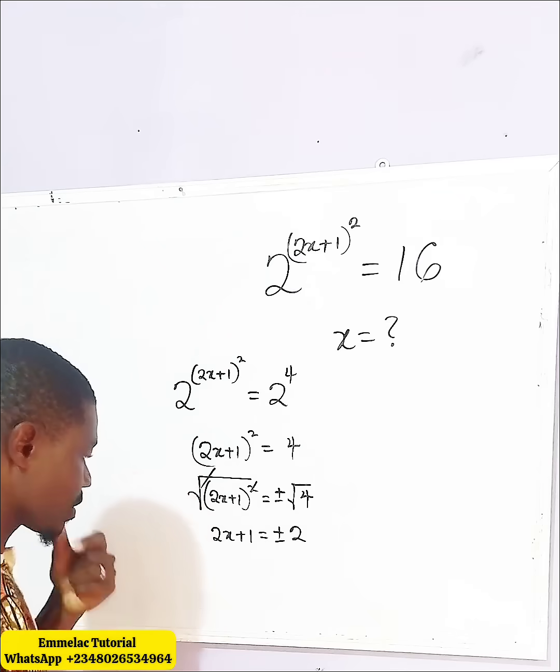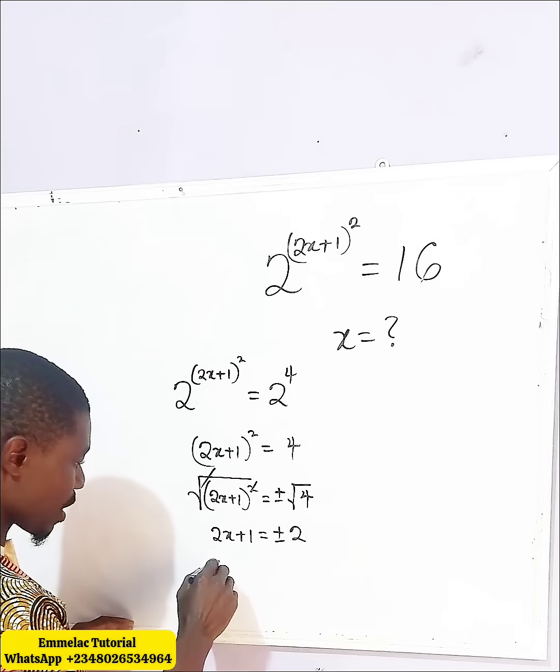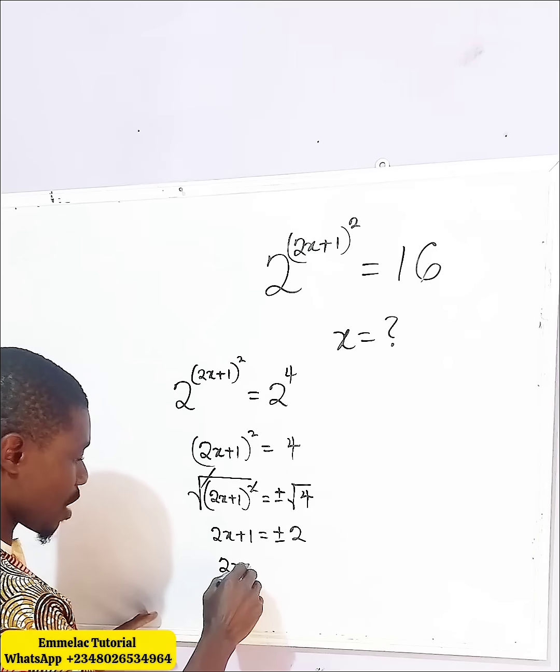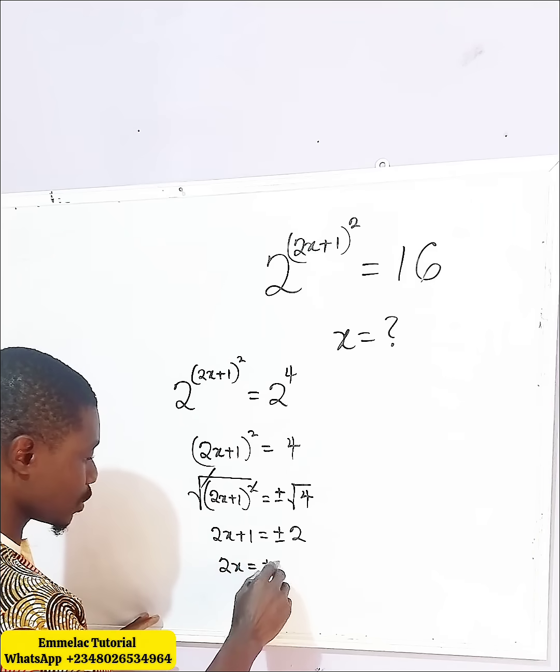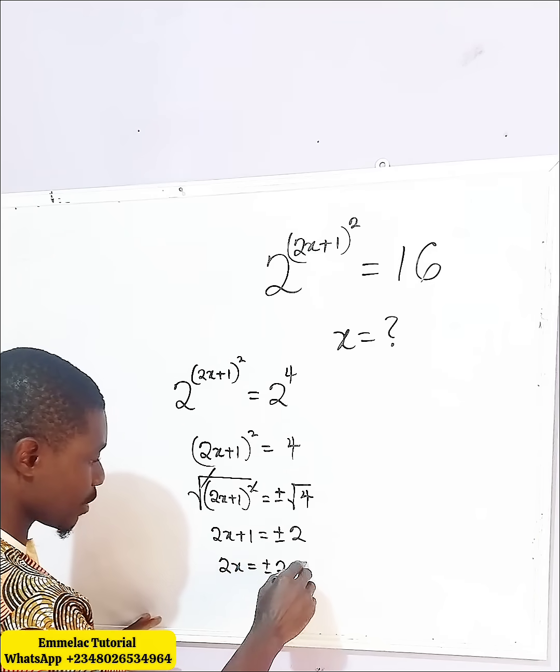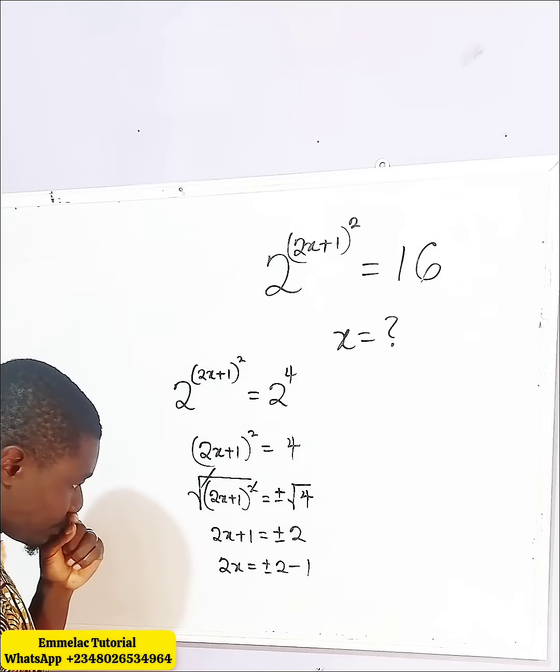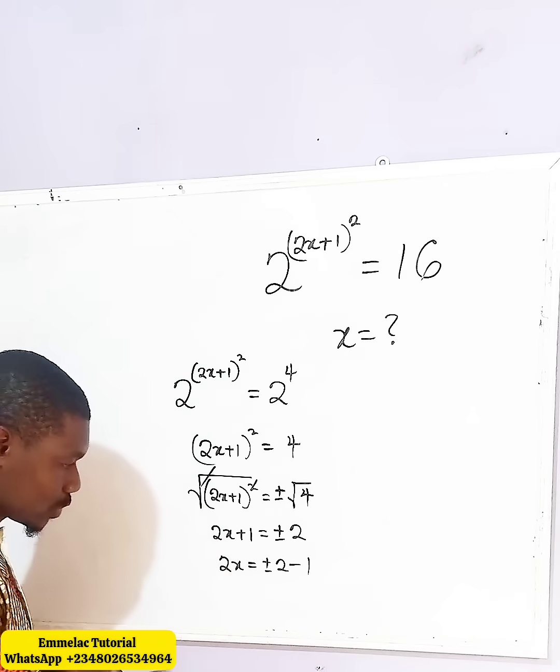So at this point now, here we have 2x. Now subtracting 1 from both sides, we have equal to plus or minus 2 minus 1. So it means here, let's divide both sides by 2.